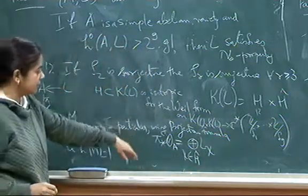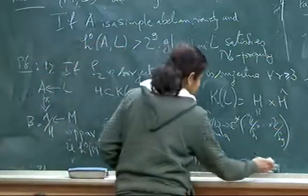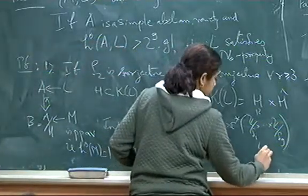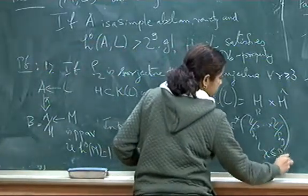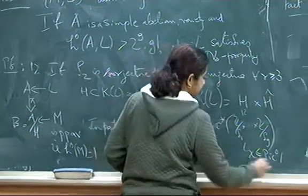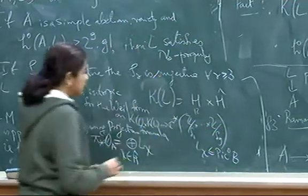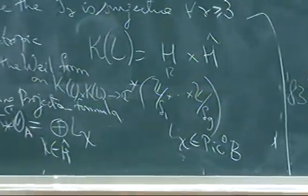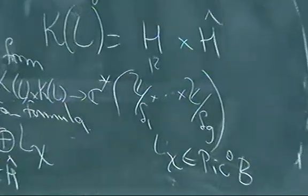Given any character one can associate L_chi, they are in pic^0. These are line bundles on B actually, I mean because this is principally polarized. So there is an isomorphism to pic^0 B.